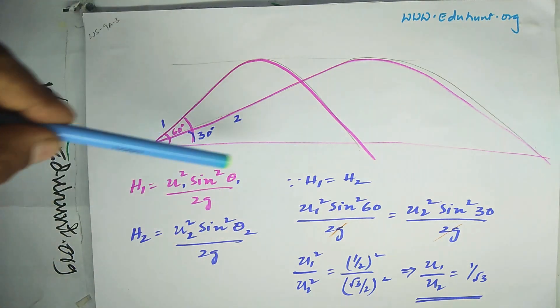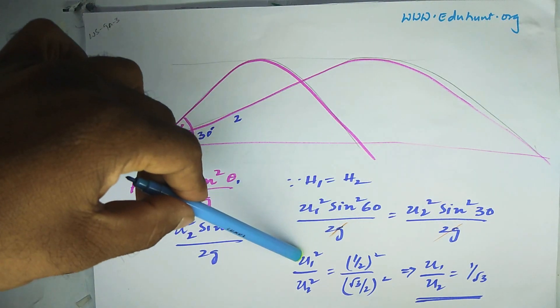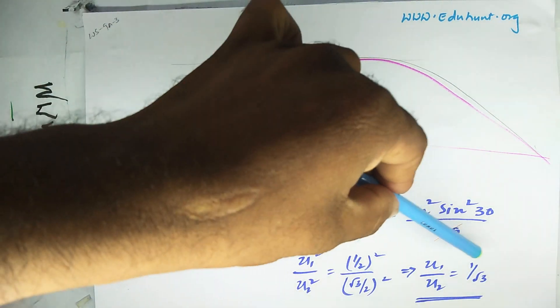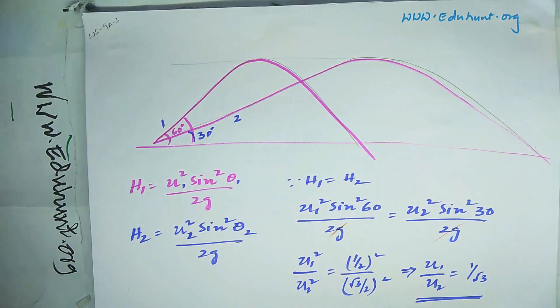Given that h1 equals h2, equate these two and simplify. You will get u1 squared by u2 squared, and when the sine squared terms move in this direction, you will get 1 by root 3.